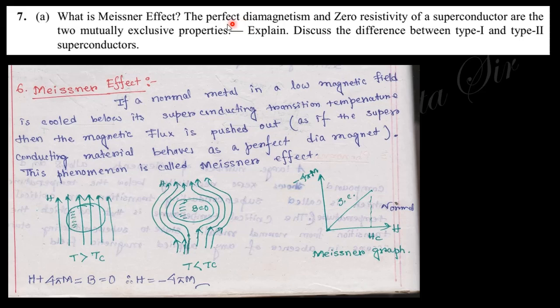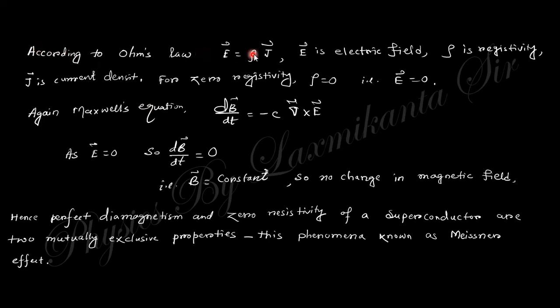Next question was: The perfect diamagnetism and zero resistivity of superconductor are mutually exclusive properties. Perfect diamagnetism and resistivity is zero. From here you will get zero, and from the actual equation you will obtain this formula. Finally, you'll get that the magnetic field is also constant, so there is no contradiction between these two effects from this relation.